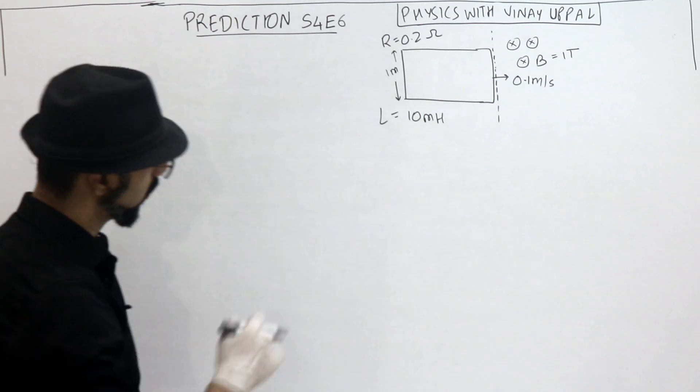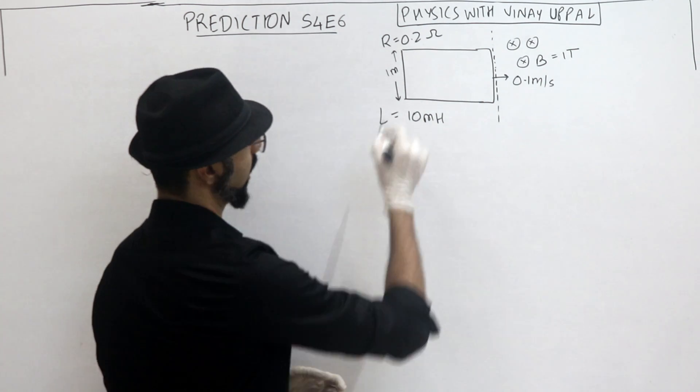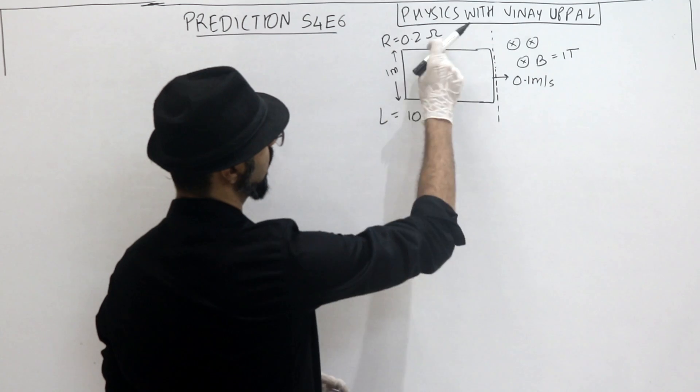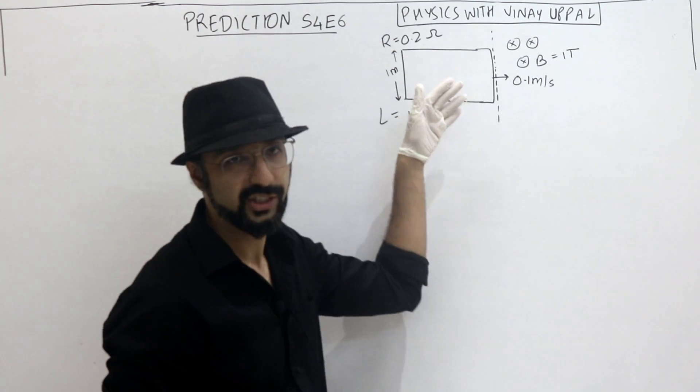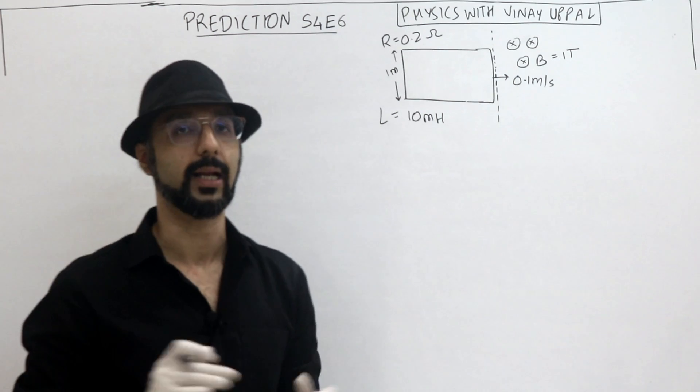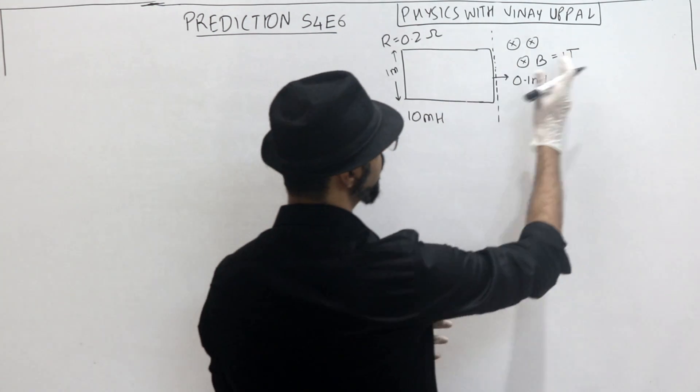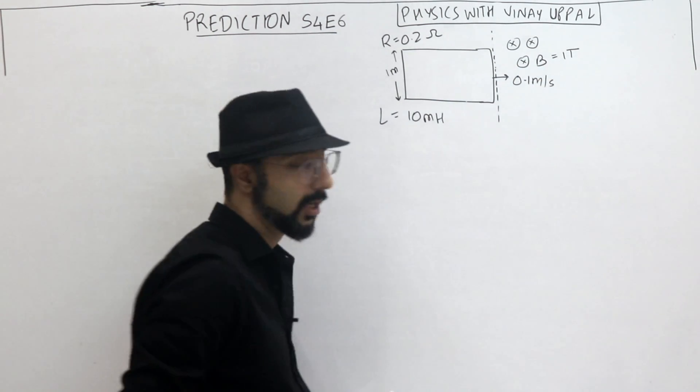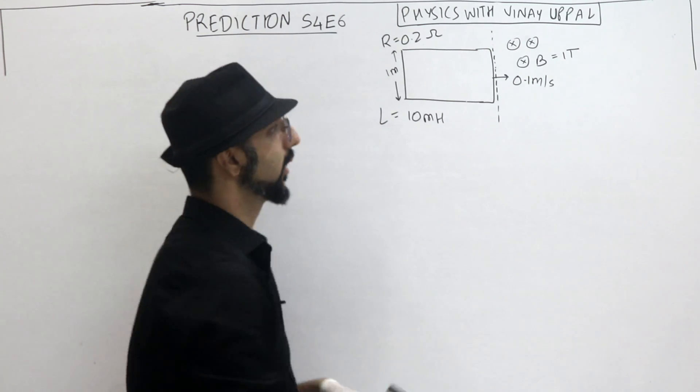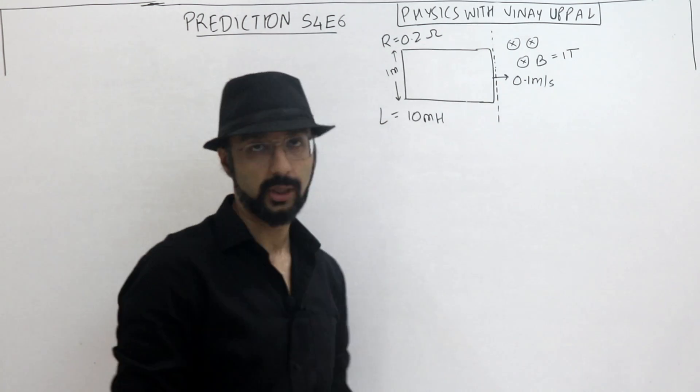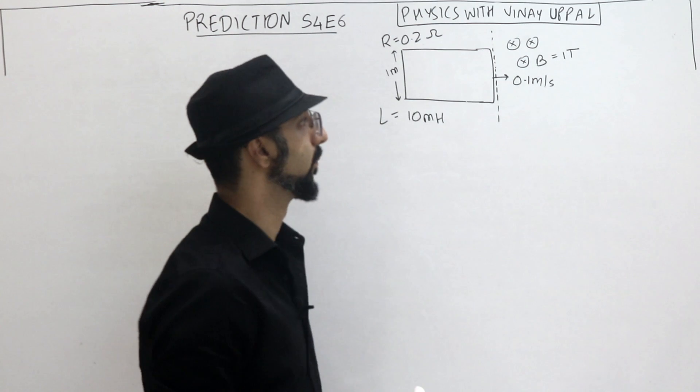Alright, so let's solve this question. The question is that I have a rectangular wire frame. It has a resistance, self-inductance, and length. And it enters the region of uniform magnetic field of one Tesla. So you ask what is the maximum value of the current and when does it occur? At t equals zero with an initial velocity.